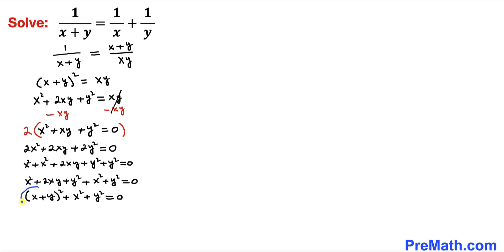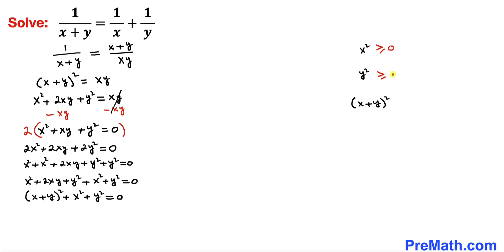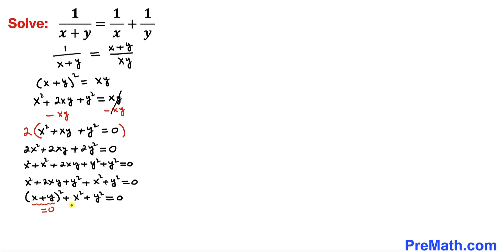Let's focus on (x plus y) squared, x squared, and y squared. We know that x squared is always greater than or equal to 0, likewise y squared is greater than or equal to 0, and (x plus y) whole squared is greater than or equal to 0 as well. But the right hand side is just 0. So therefore each of these terms must individually equal 0: (x plus y) squared equals 0, x squared equals 0, and y squared equals 0.